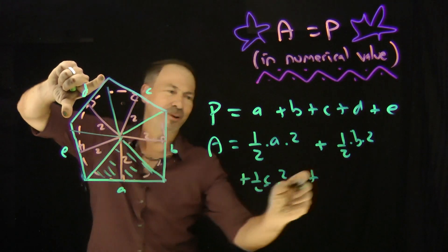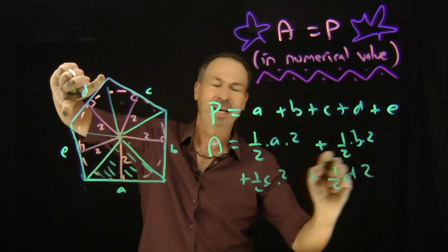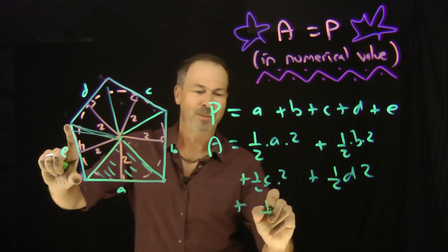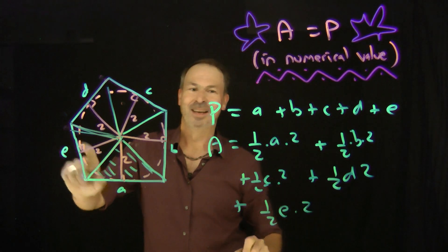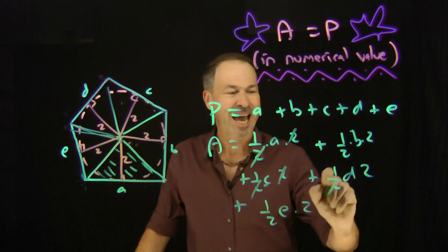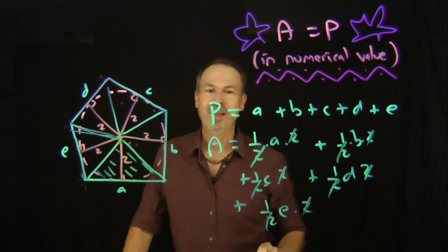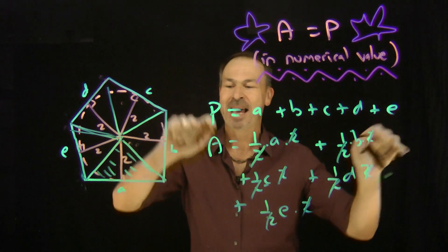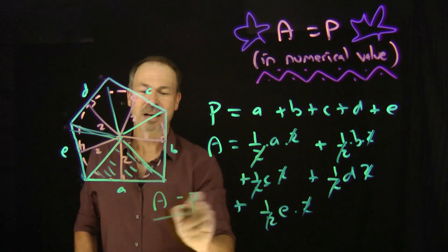Half base times height. Plus the final triangle here, which I've got there right now. Base of E, height of 2. Half base times height. And here's the thing. I chose a radius of 2, and all these cancel out. What we're left with for the area? A plus B plus C plus D plus E. Area equals perimeter in numerical value for this polygon circumscribed to the circle of radius 2.